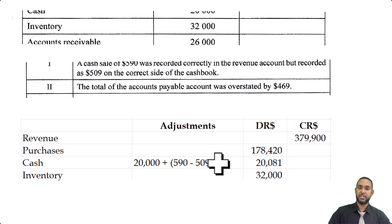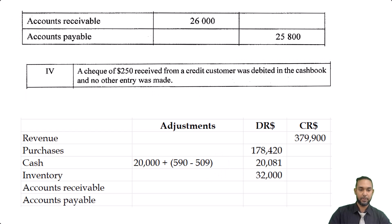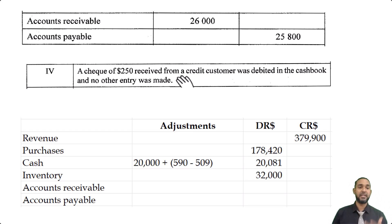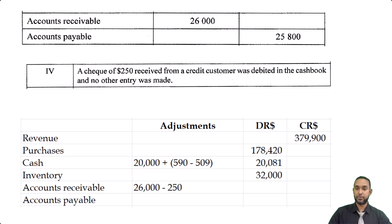Inventory had no adjustment. For accounts receivable, that was error four: a check of $250 received from the customer was debited in the cashbook but no other entry was made. You must credit where the money came from — accounts receivable — to reduce it. So $26,000 minus $250 gives us $25,750.